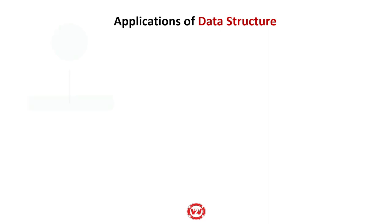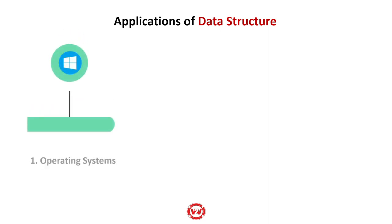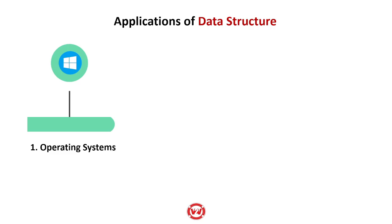The first application of data structure is in building an operating system. You need an efficient operating system for updating records. When building an operating system, you need a data structure for everything the OS provides: file management, memory management, deadlock prevention, process management, etc. For all of these, you definitely need a format or data type under which you are going to store the data.